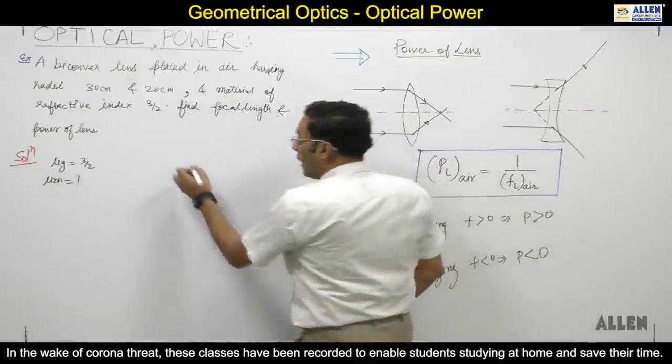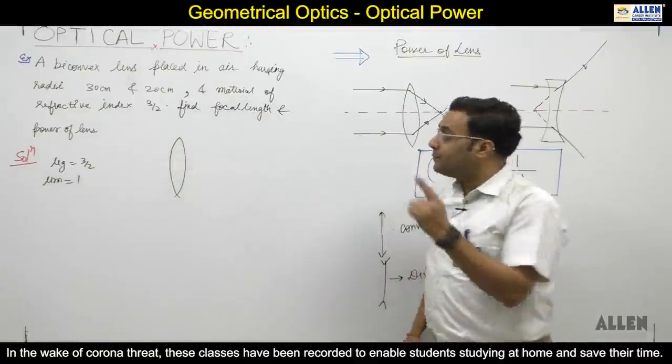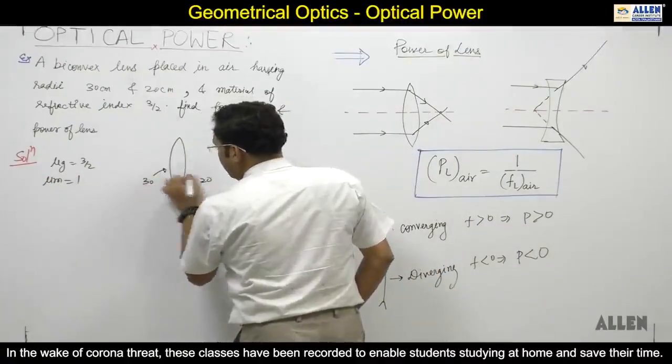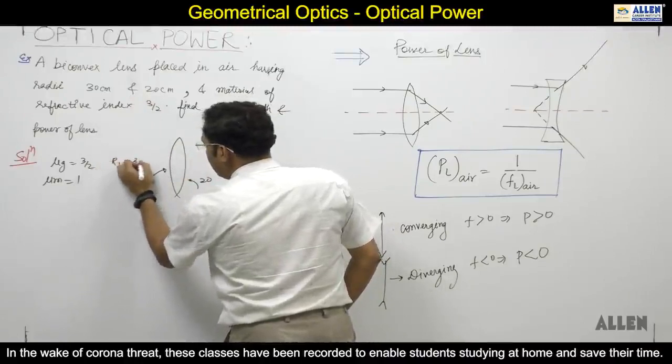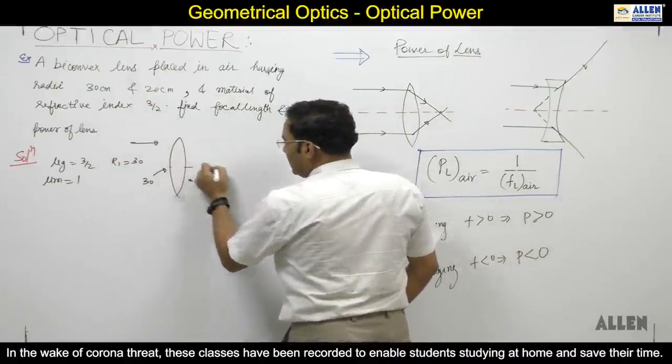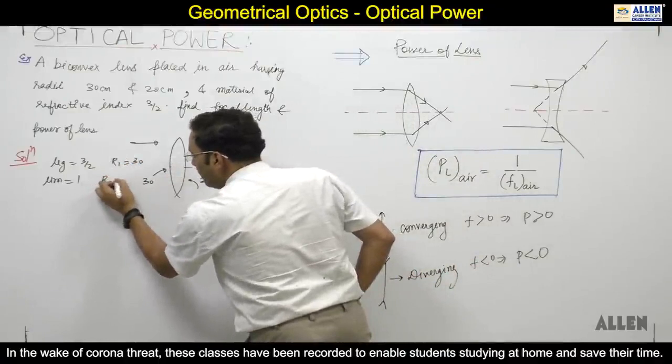Bi-convex lens means convex lens family. First, bi-convex lens radii are 30 and 20. So r1 is plus 30, as incident light is in this direction. The other side is opposite, so r2 will be minus 20.